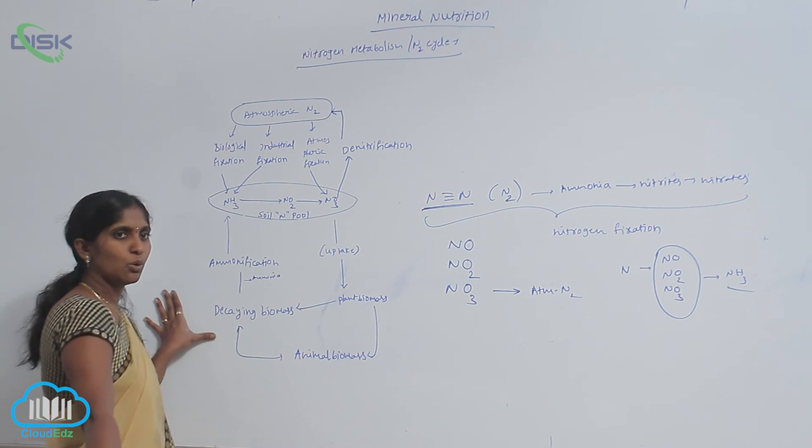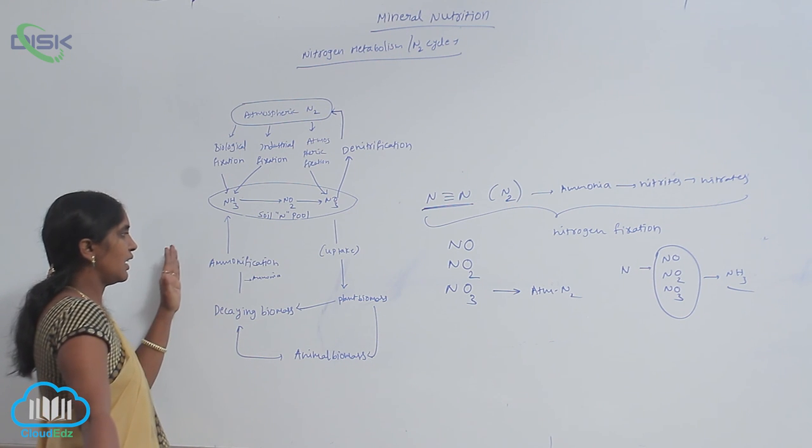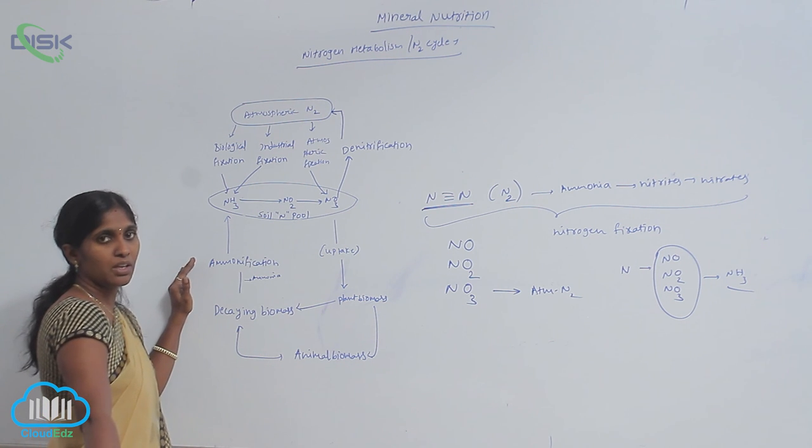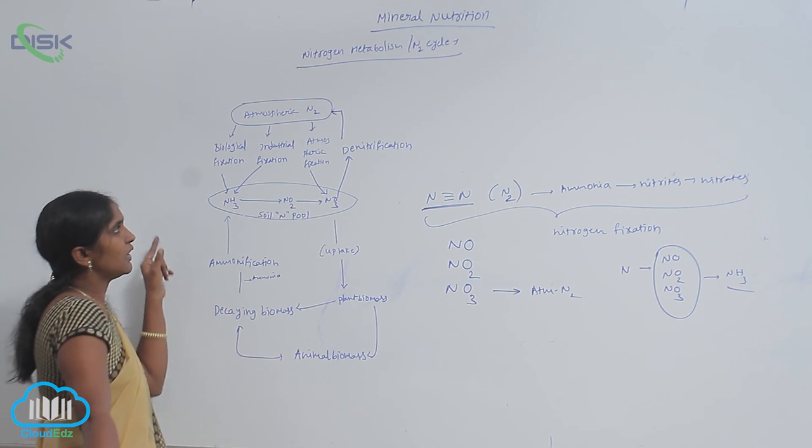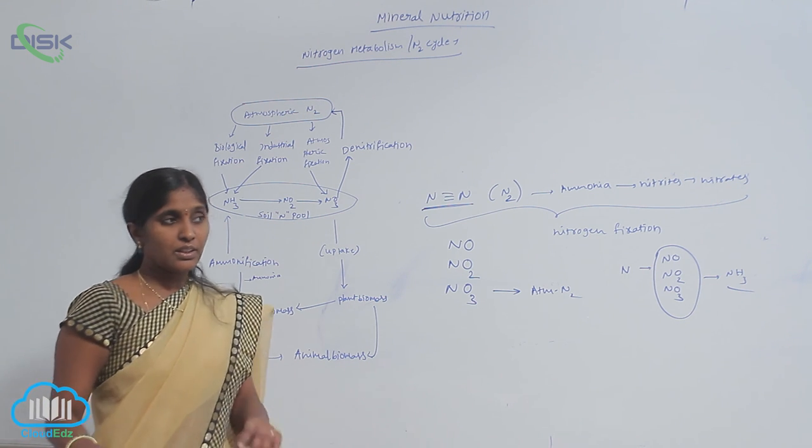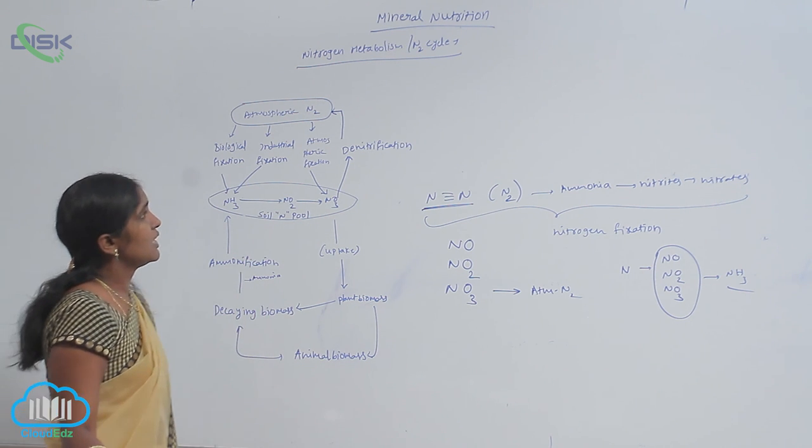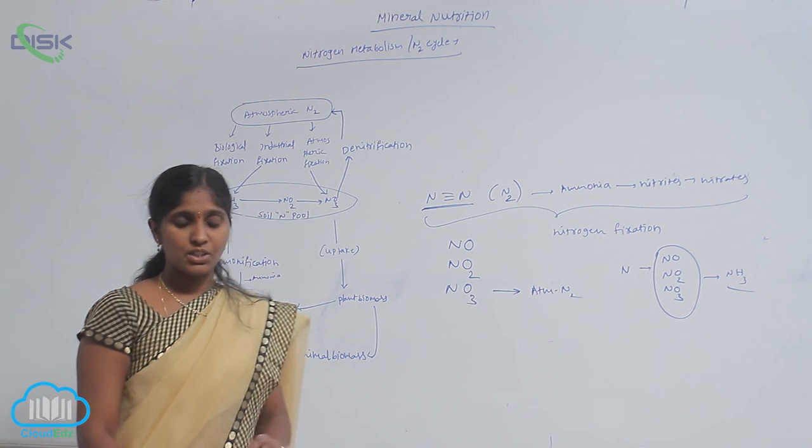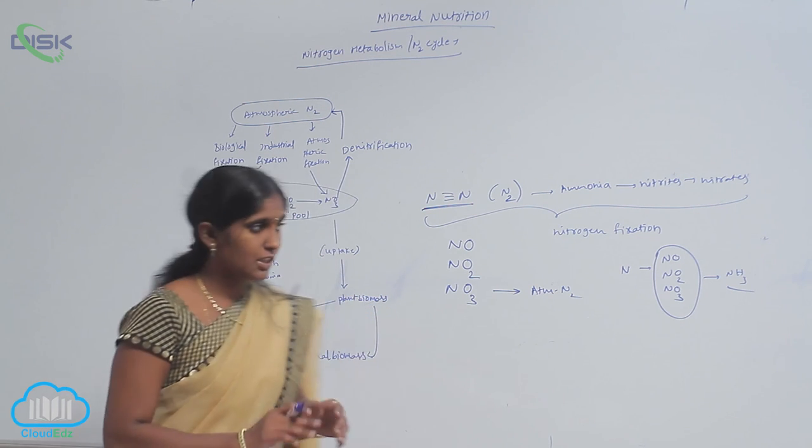After that, they go for decomposition and again ammonification—ammonia is formed. It is a circular form. So the complete circular form is called nitrogen assimilation.